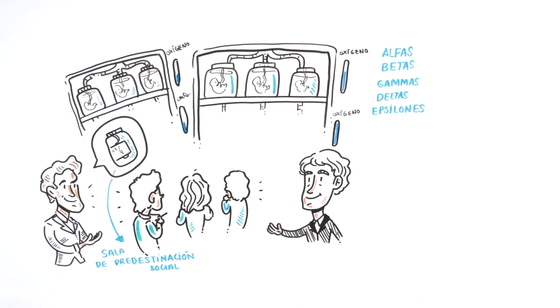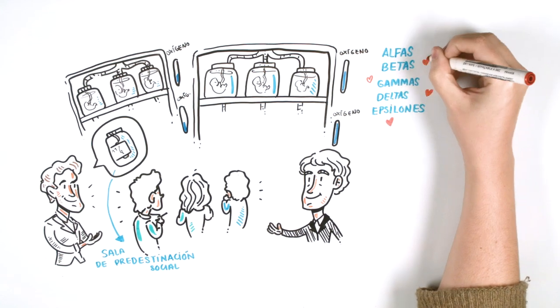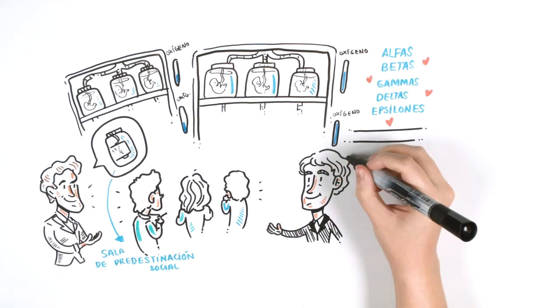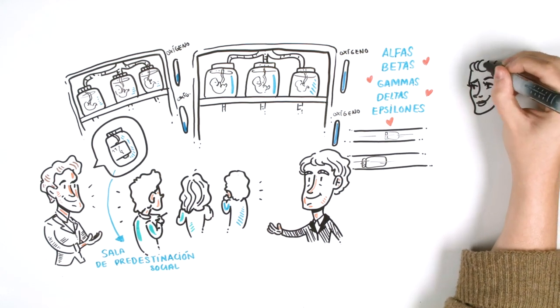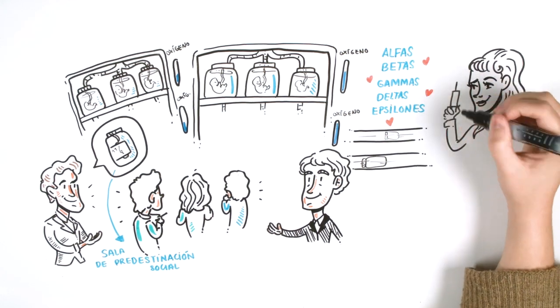Regardless of their membership, everyone was educated for their social destiny. Then the room ended with tunnels that took the bottles. There was Lenina, a beautiful nurse who injected typhus into the bottles to immunize them.